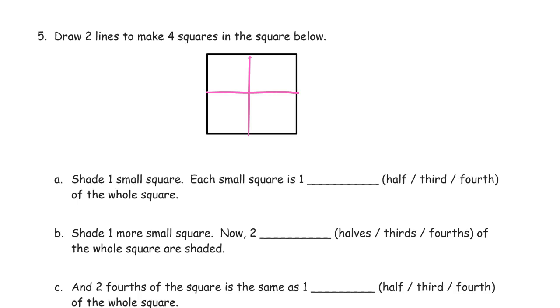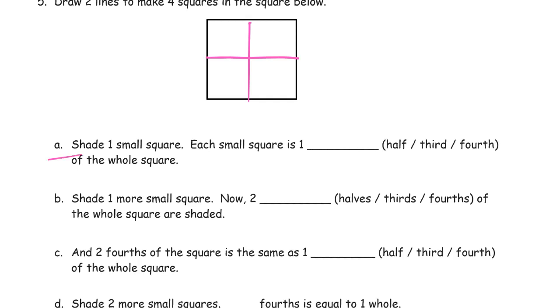Now it says shade one small square. Okay. Each small square is what? One half, one third, or one fourth? Well, there's four of them. So it's a fourth. A fourth of the whole square.